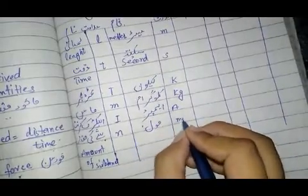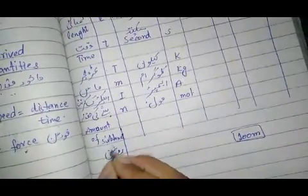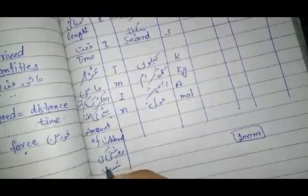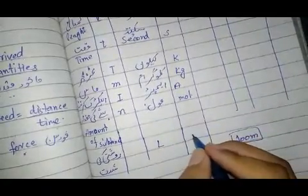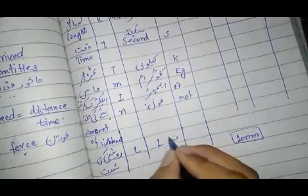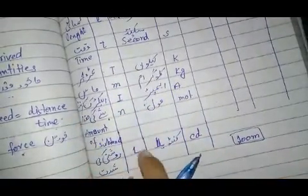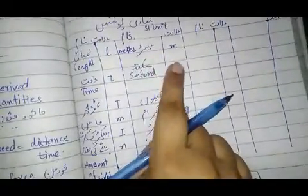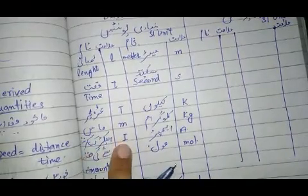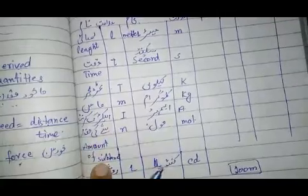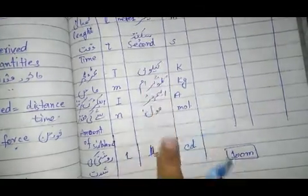The next base quantity is the intensity of light, or luminous intensity. Its symbol is capital 'L', its unit is the candela, and its symbol is 'cd'. So we have 7 base units in total: length (L), time (t), temperature (T), mass (m), electric current (I), amount of substance (n), and luminous intensity (L).